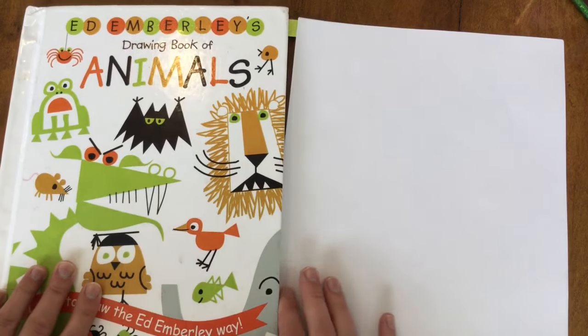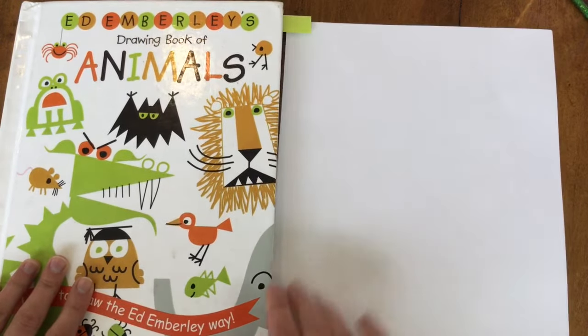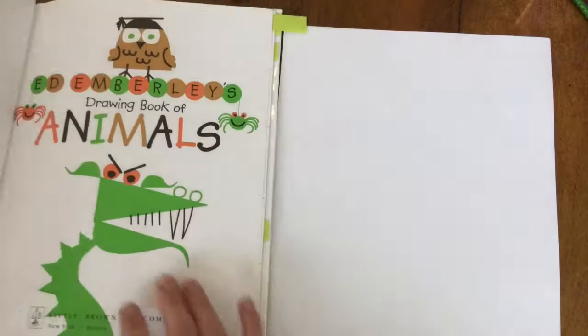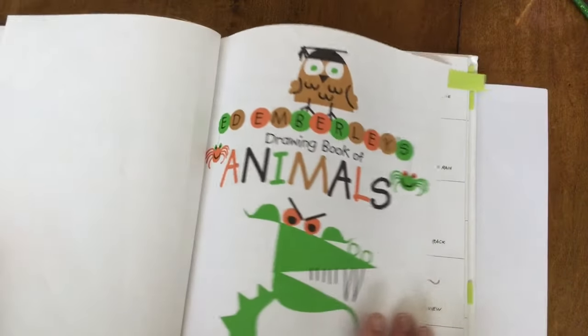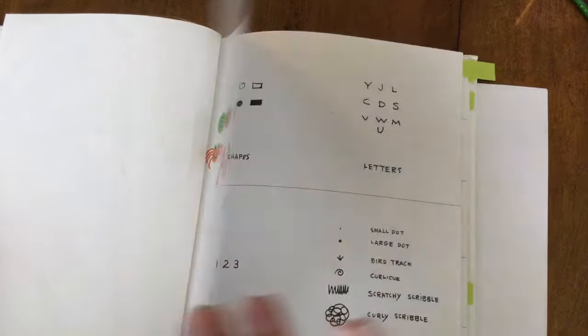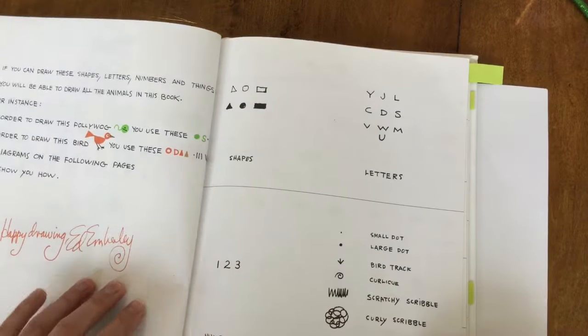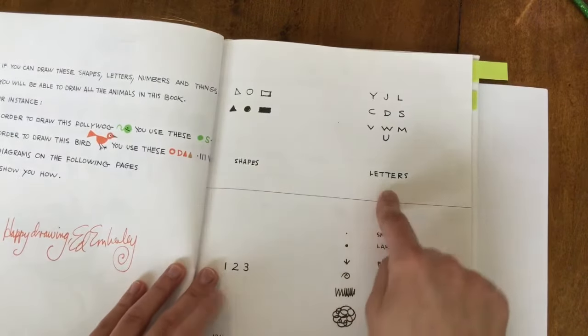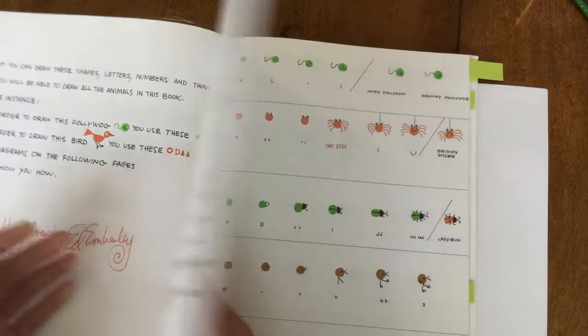I'll do two today using simple shapes and then we'll come back and do some more another day. So in his book here there's lots of simple drawings using different shapes, letters, types of dots and numbers and things.